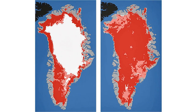The largest melt event recorded so far is pictured here, where on July 12, 2012, the entire ice sheet experienced surface melting conditions. As warming continues, we can expect more days with melt, as well as increases in surface melt area and intensity.